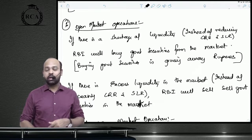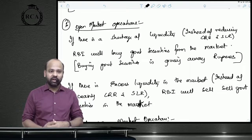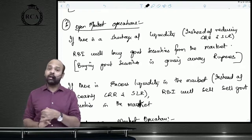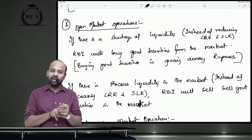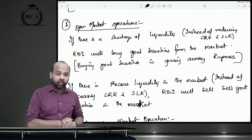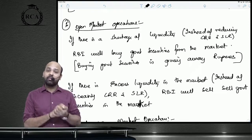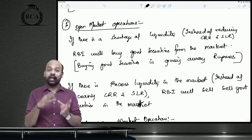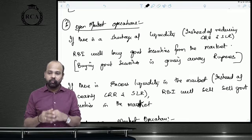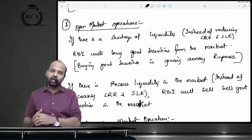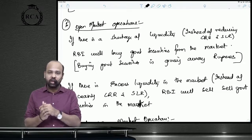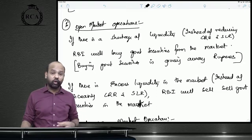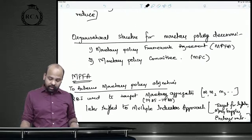Open market operations (OMO) work as follows: if there is excess liquidity, the RBI sells securities to absorb it; if there is a deficit, the RBI buys securities to infuse liquidity. Recently, special open market operations were conducted where the RBI simultaneously sells short-term government securities and buys long-term government securities. This creates demand for long-term securities, raising their price and thereby lowering long-term interest rates.